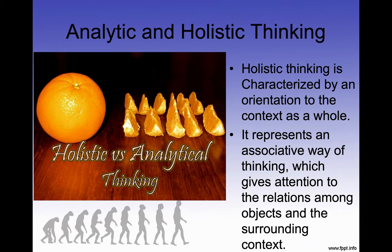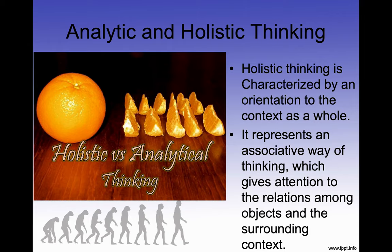Holistic thinking is characterized by an orientation to the context as a whole. It represents an associative way of thinking which gives attention to the relations among objects and the surrounding context. So holistic thinking is seeing the forest — the intact whole — while analytical thinking is trying to break things down into their component parts, seeing the trees rather than the forest. This is the way Western thinking goes. It's more analytical — we put things together by breaking them apart.